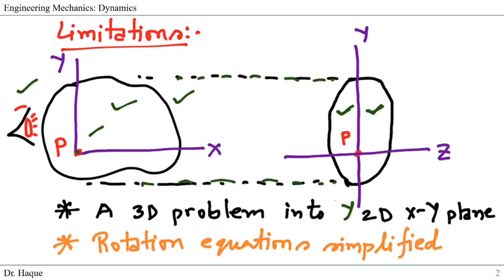Why is it important? In this way, a 3D problem becomes a 2D x-y plane problem. We can only worry about the x-y plane because it's symmetric. If my point is anywhere on one side of the x-y plane, it's the same as if it was on the other side of the plane. Most importantly, the rotation equations become very simplified when you have the symmetry plane. That's the limitation for this course when doing planar kinetic equations of motion for rigid bodies.